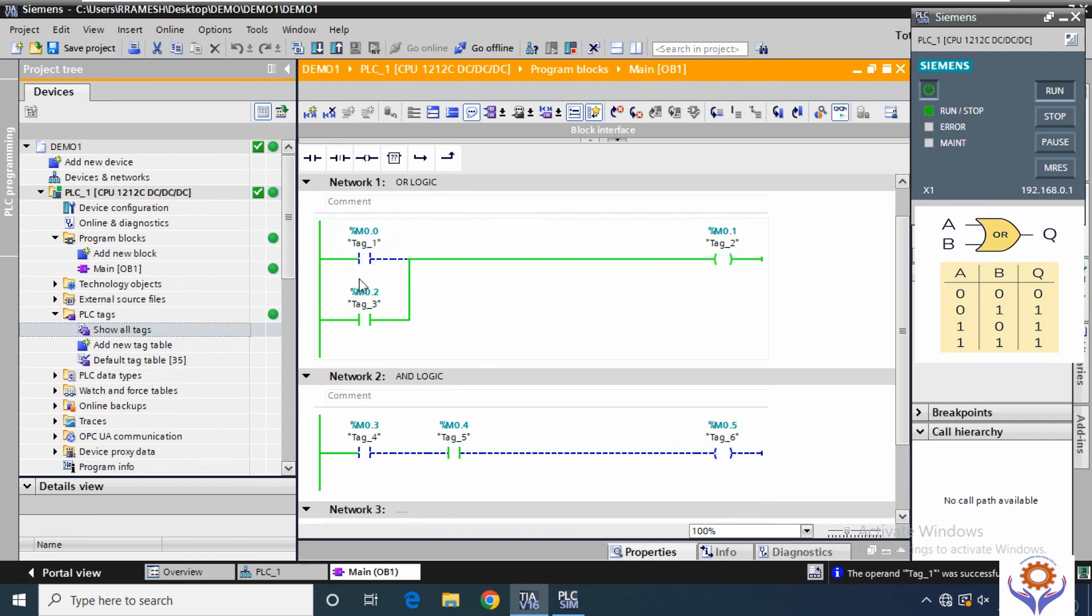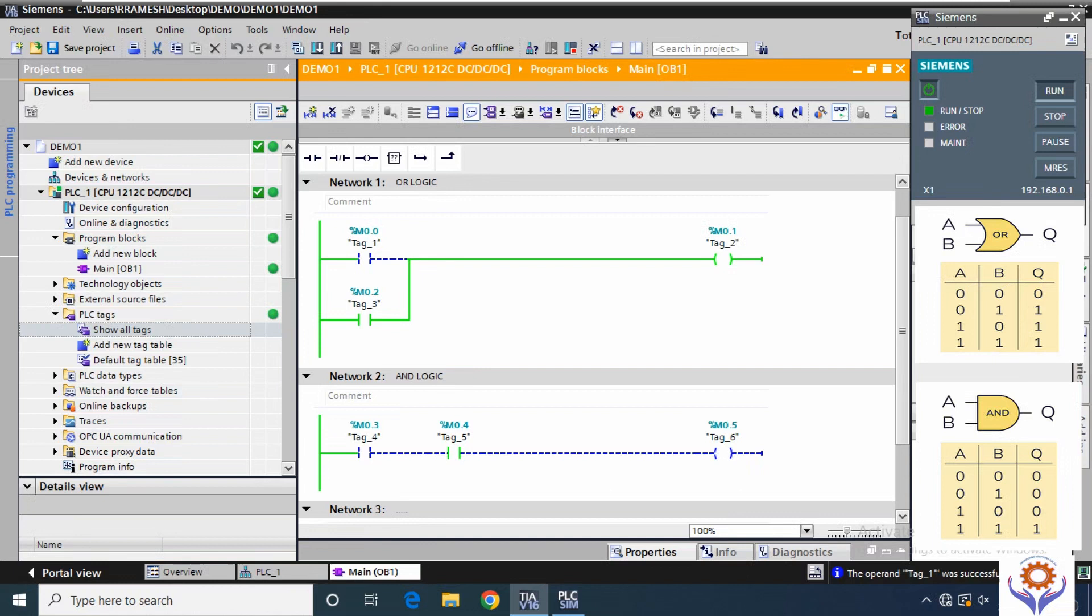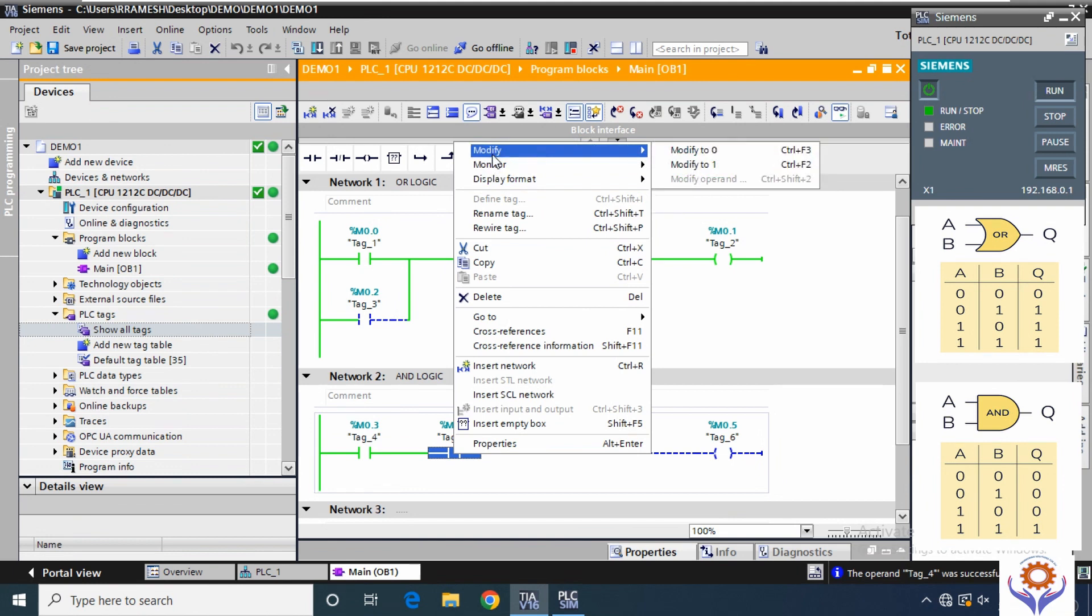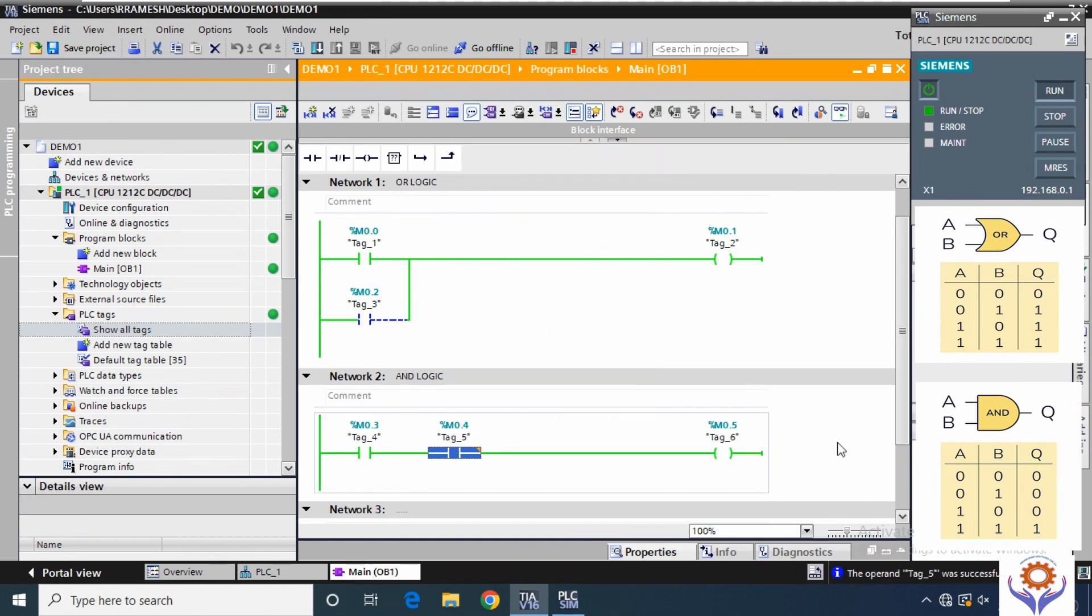Now we will move to the AND gates. If the input number 1 is ON in AND gates, this will not generate any output because both the inputs are connected in series. So it will need to turn the second input as well. Now both inputs are ON. So the output becomes 1. This is called AND logics.